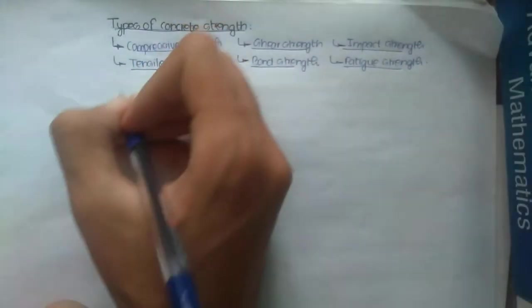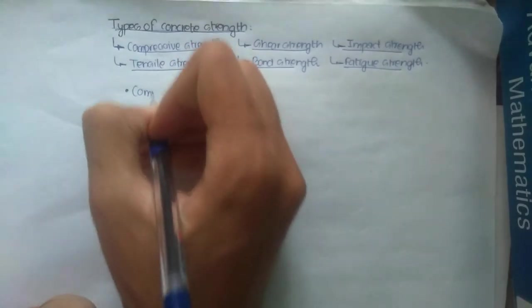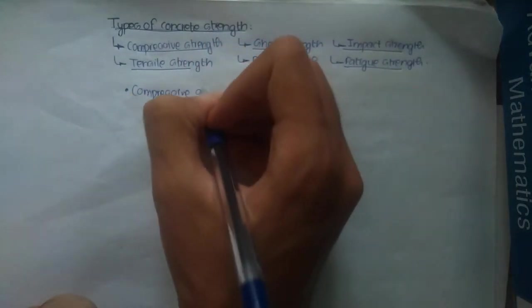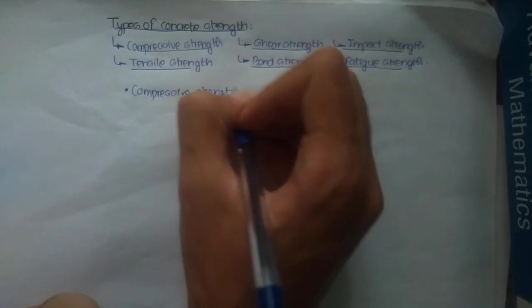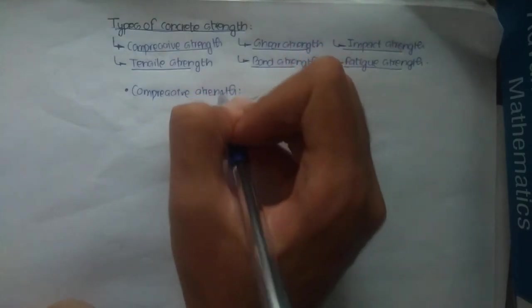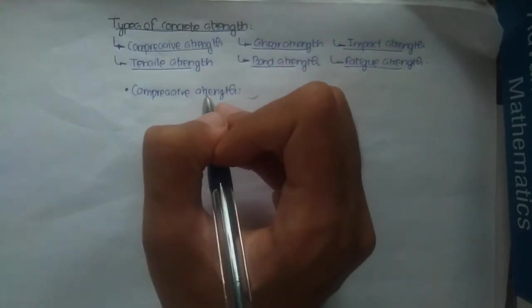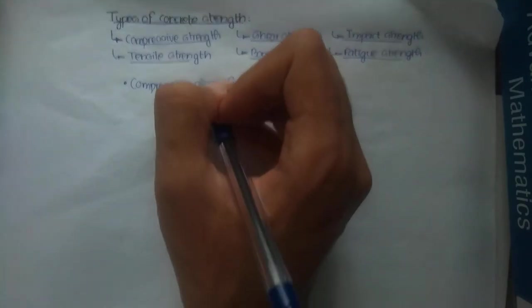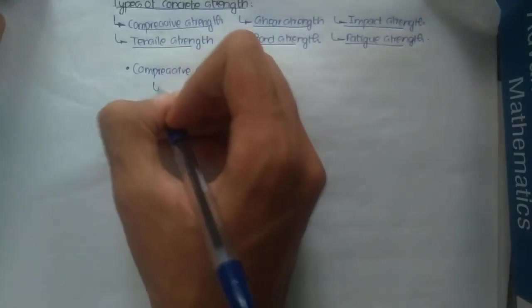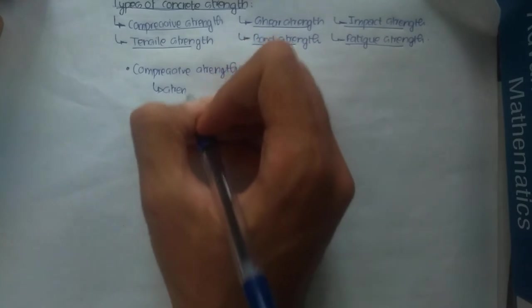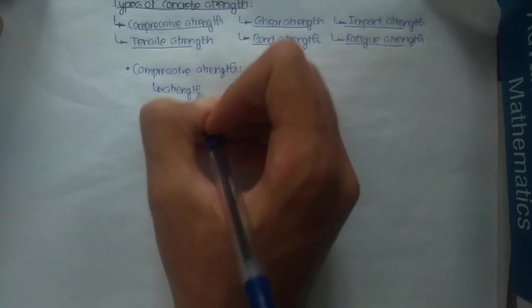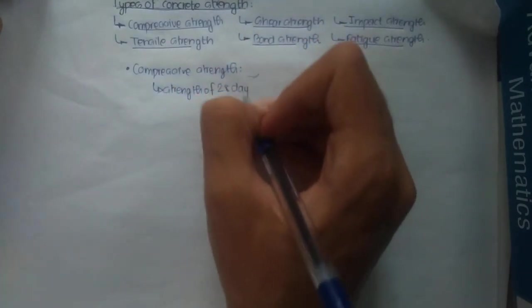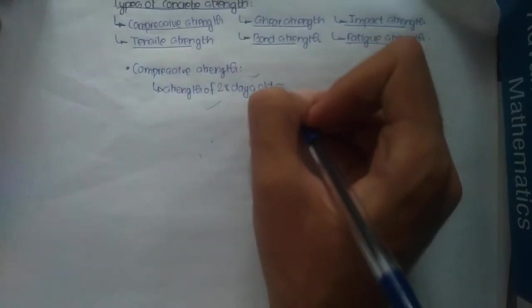Firstly, we'll be talking about compressive strength. Compressive strength is one of the most important properties and strengths concrete can have. It is basically defined as the strength of a 28-day-old concrete specimen.